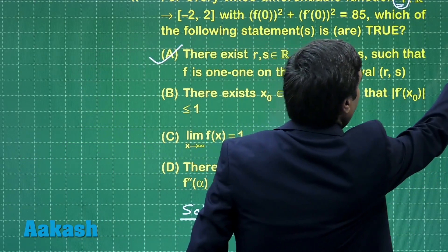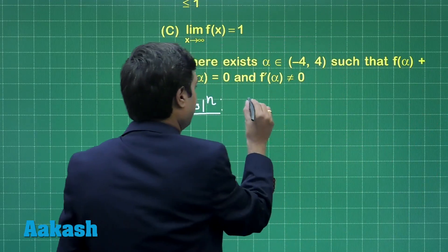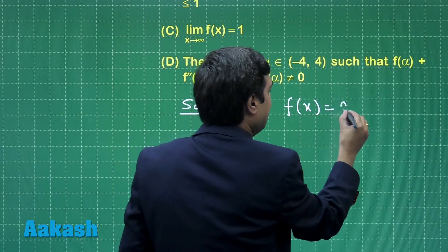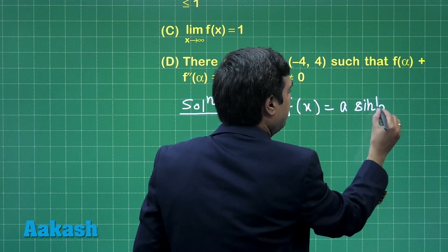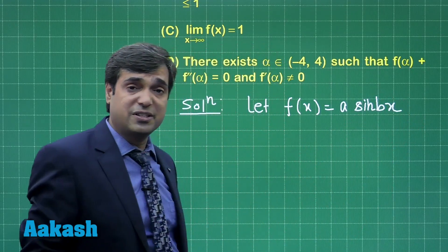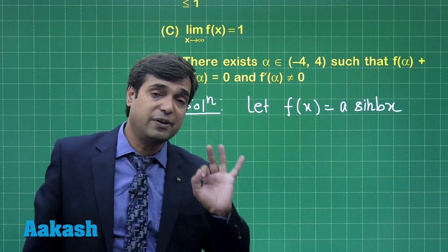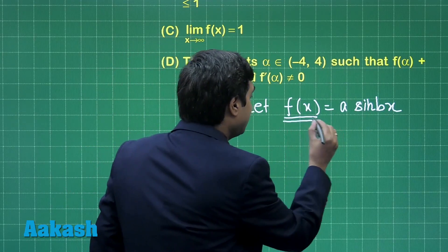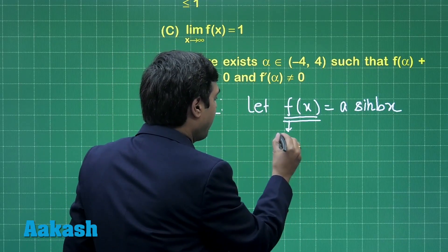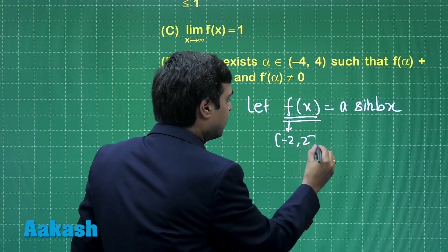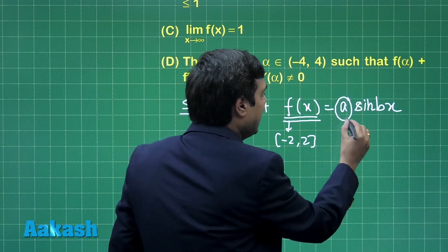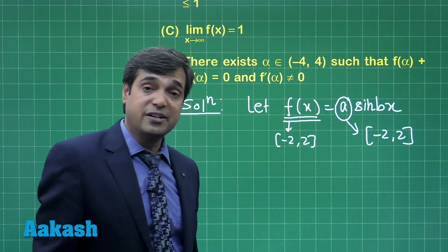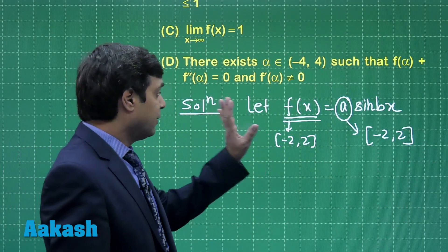Let us consider a function of the type a sin(bx) in general because it is given in the question it is true for every such function. Consider this one as a function f(x) is lying in the interval minus 2 to 2. Clearly a will also lie in the interval minus 2 to 2 because sin(bx) is lying in the interval minus 1 to 1, this is clear.